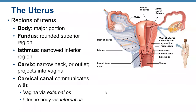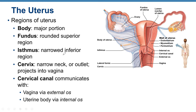Regions of the uterus include the body (main portion), fundus (superior rounded region), isthmus (narrow inferior region of the body), and cervix (narrow neck or outlet that projects into the vagina). The cervical canal communicates with the vagina through the external os and with the uterine cavity through the internal os.